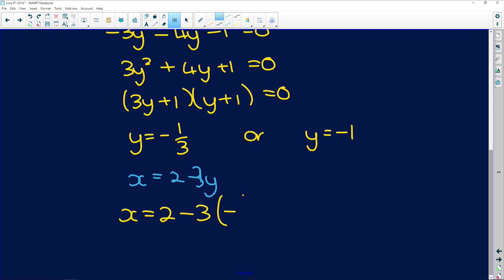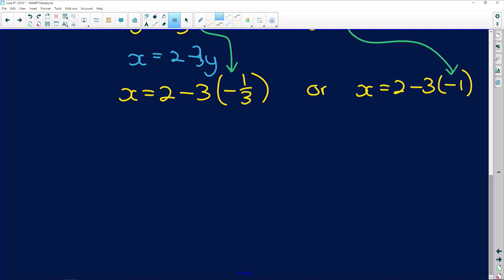So x is equal to 2 minus 3 times negative 1 third, or x is equal to 2 minus 3 times negative 1. You substitute that y in there and this y in here. So that gives us x is equal to 2, negative 3 multiplied by negative 1 third is positive 1, so x is equal to 3. Or on this side, x is equal to 2, negative 3 multiplied by negative 1 is plus 3, so x is equal to 5.